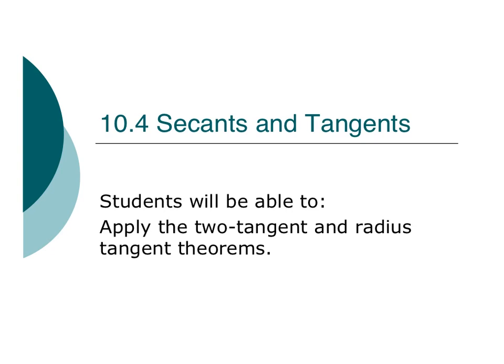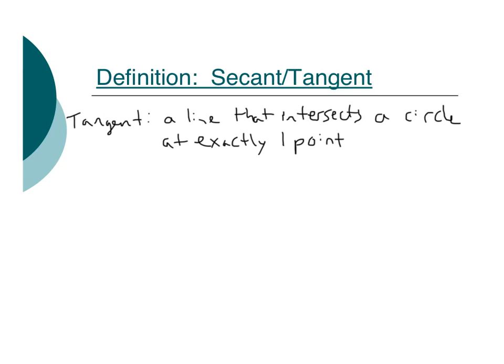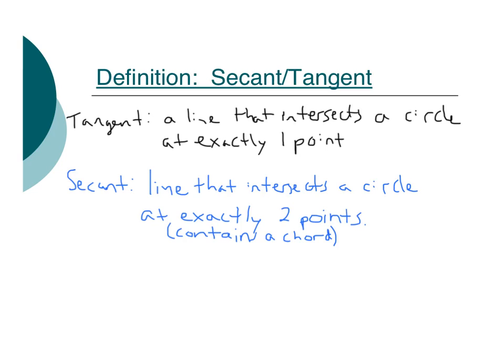It's time for secants and tangents. You guys are going to be able to apply the two tangent and radius tangent theorems. A couple definitions for you here. For a tangent, it's a line that intersects a circle at exactly one point. And a secant is a line that intersects a circle at exactly two points.